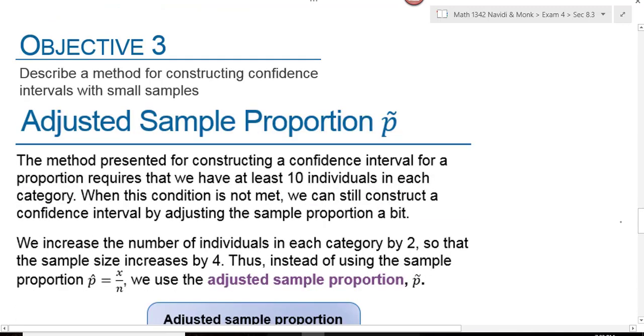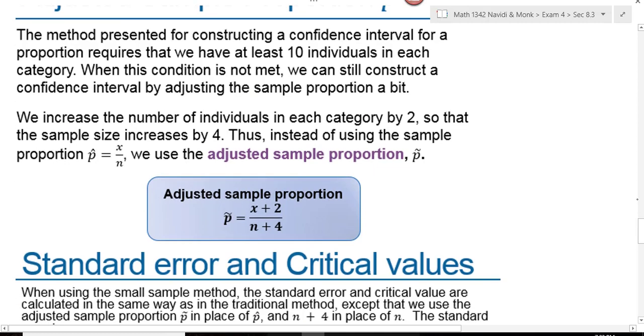Objective 3 tells us what we can do if we have a small proportion. What do we do if N times P-hat and N times Q-hat are not equal to 10? For confidence intervals, we can still work the problems. We just have to use an adjusted sample proportion called P-tilde.